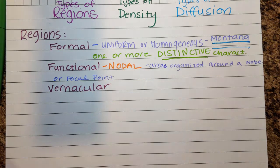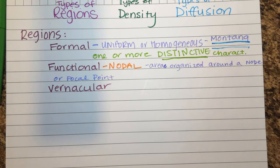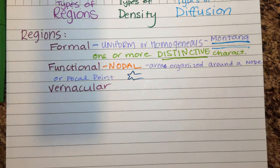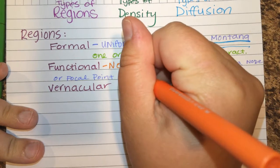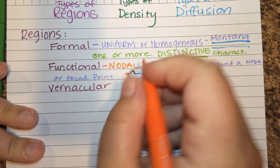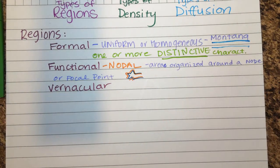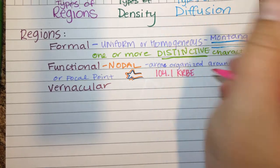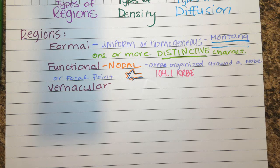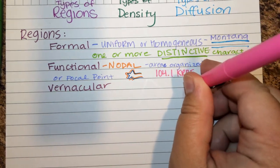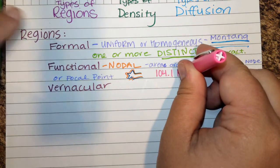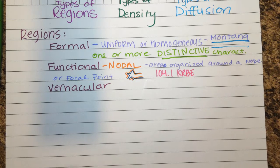An example of a functional region is how people in the Houston area tend to primarily be Astros fans — that fan base is centered around Houston, and as you get further outside of Houston, it fades. It could also be a radio station like 104.1 KRB Houston, which plays for areas around Houston including Cypress, because there's a central point like a radio tower that emits signals — wherever those signals reach, that is the functional region.